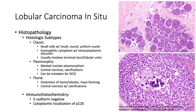The histopathology of lobular carcinoma in situ includes multiple histologic subtypes. The classic subtype, as seen in the upper right-hand corner of the screen, includes small cells with small, round, uniform nuclei and eosinophilic cytoplasm with intracytoplasmic vacuoles, and will typically involve the terminal duct lobular units. The pleomorphic subtype is defined by marked nuclear pleomorphism, central necrosis and calcifications, as seen in the bottom right-hand corner, and can easily be mistaken for DCIS.